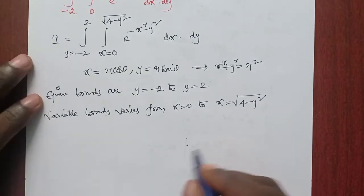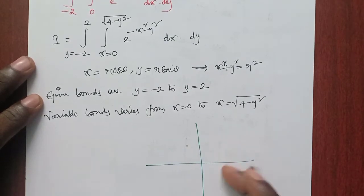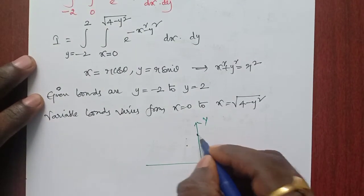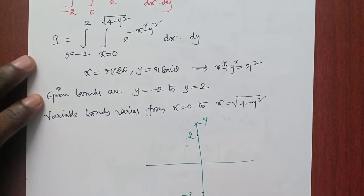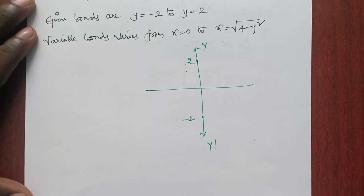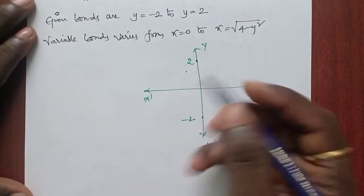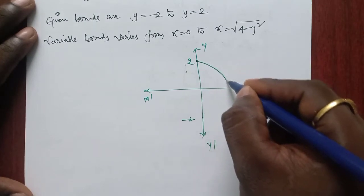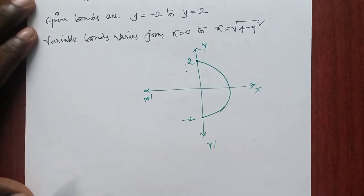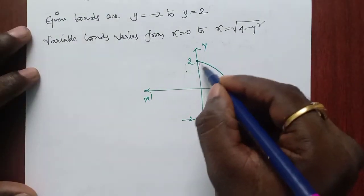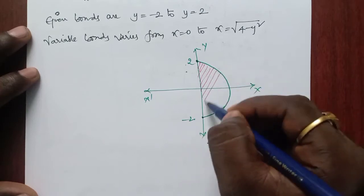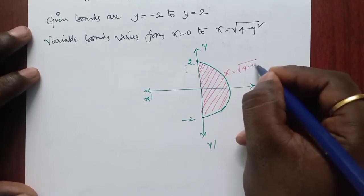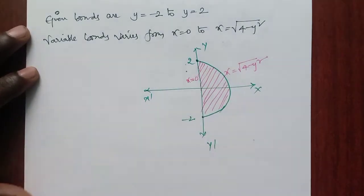Coming to the graph: for y we have both negative and positive values, y goes from minus 2 to 2. For the x axis, we have only the positive region. x equal to 0 to x equal to root over 4 minus y square represents this semicircle. This is the region of integration. The curve x equal to root over 4 minus y square, and the y axis represents x equal to 0.